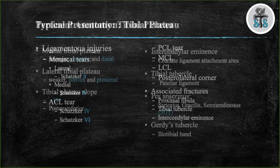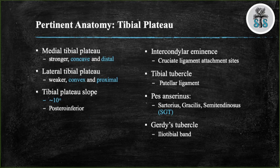The medial tibial plateau is stronger, concave, and distal to the lateral tibial plateau, which is weaker, convex, and proximal. The medial tibial plateau is responsible for 60% of the weight bearing through the knee. The average tibial slope is 10 degrees, oriented posterior and inferiorly. If you do not have access to a CT scanner, obtain an x-ray directed 15 degrees caudally with the leg in full extension to assess the tibial articular surface.